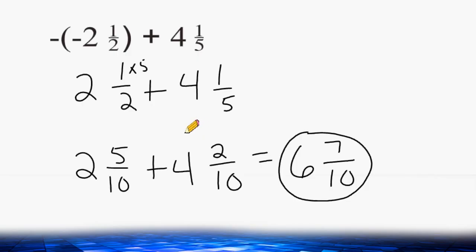Now another way that we could have done this problem is by rewriting each one of these mixed numbers as an improper fraction. We could have taken 2 and 1 half and have rewritten that as 5 halves. And then we could have taken 4 and 1 fifth and rewritten that as 21 fifths.